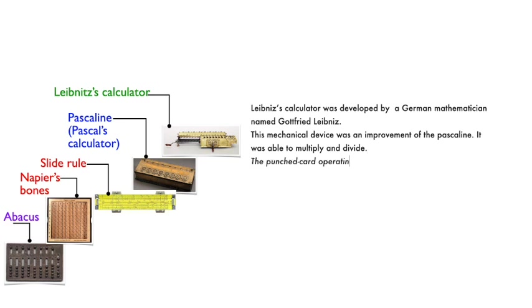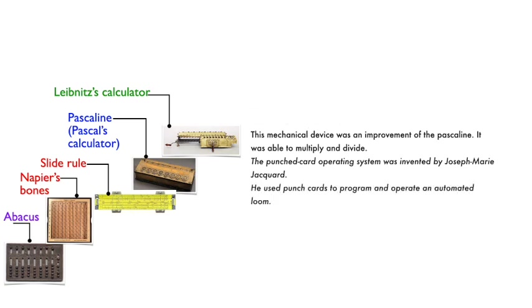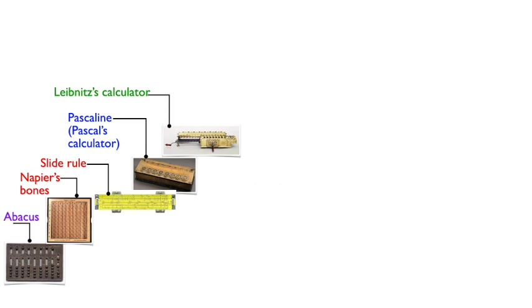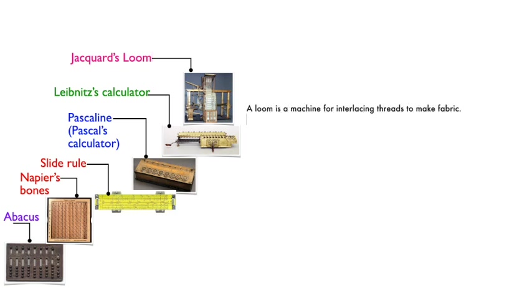The punched card operating system was invented by Joseph Marie Jacquard. He used punch cards to program and operate an automated loom. A loom is a machine for interlacing threads to make fabric. The punch cards would produce designs and patterns on fabric.